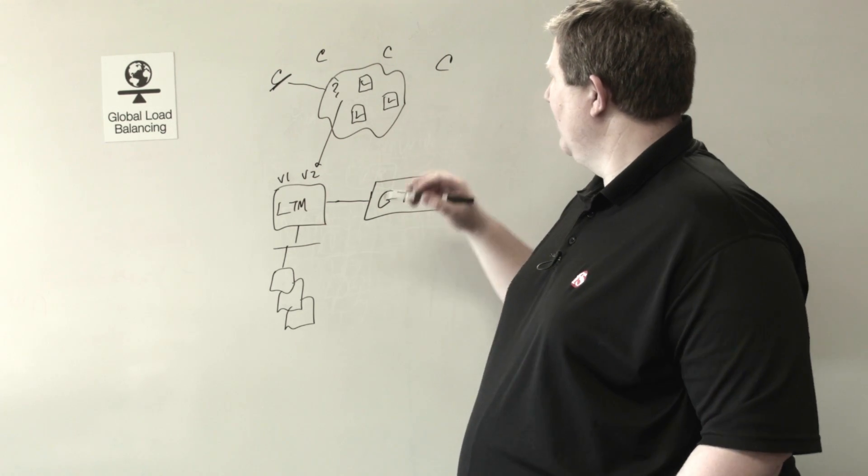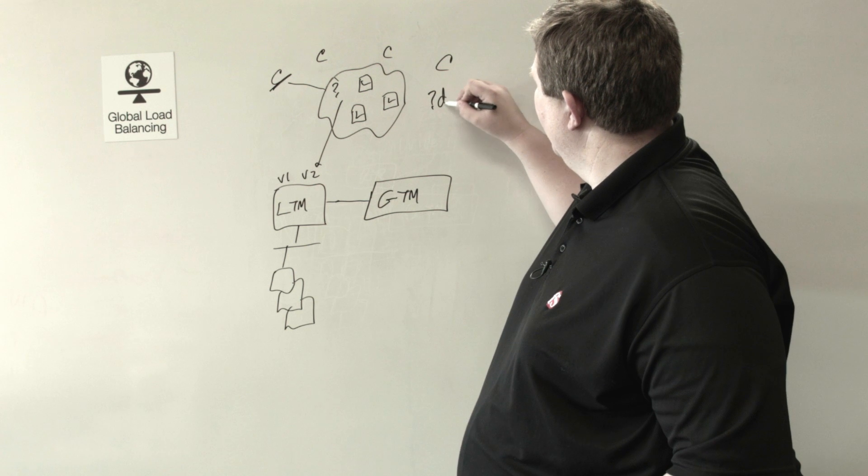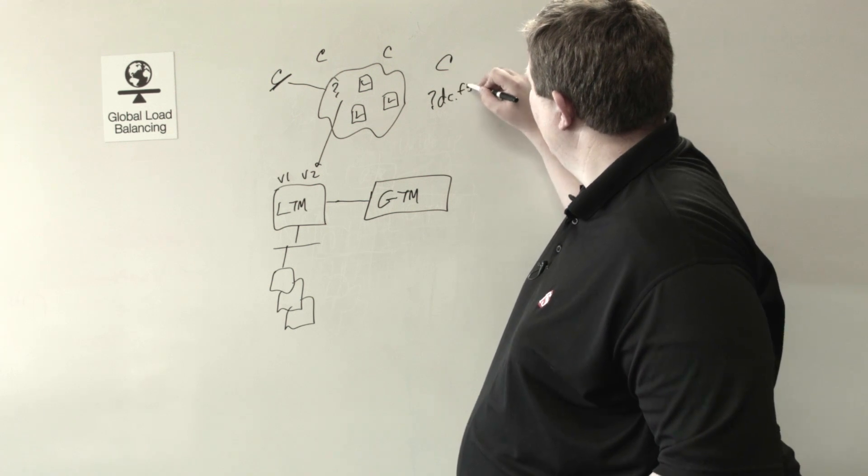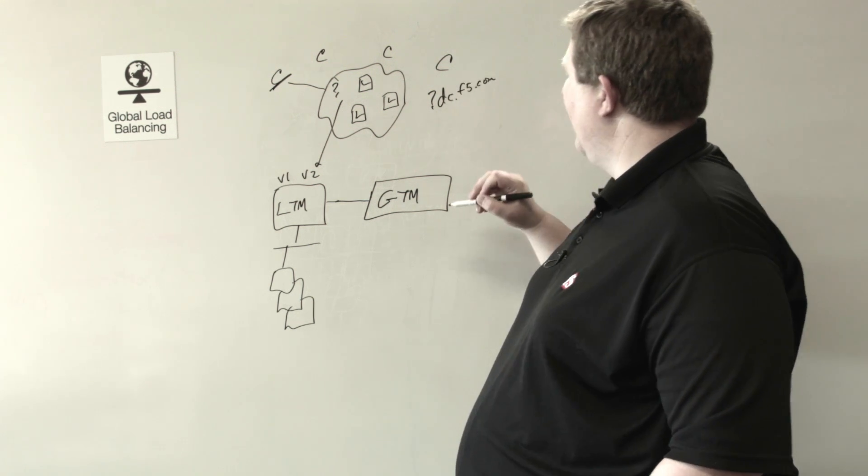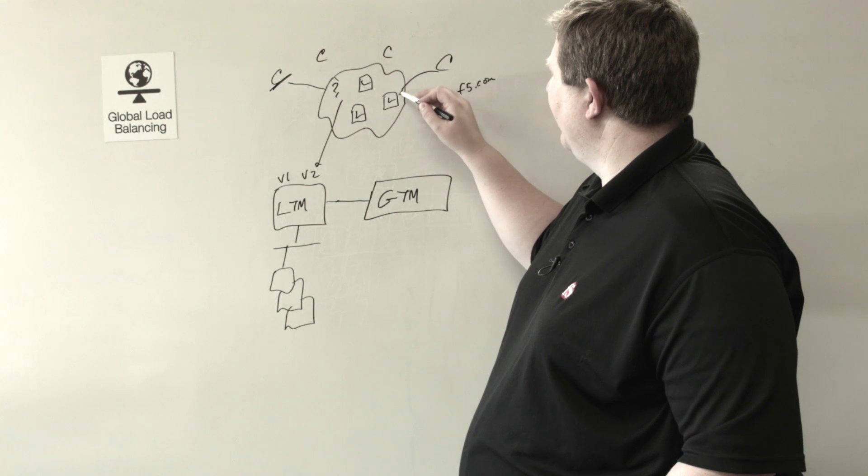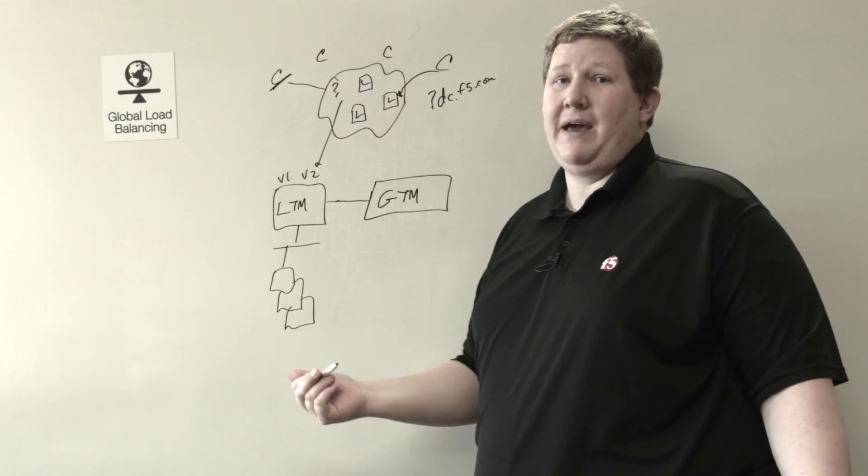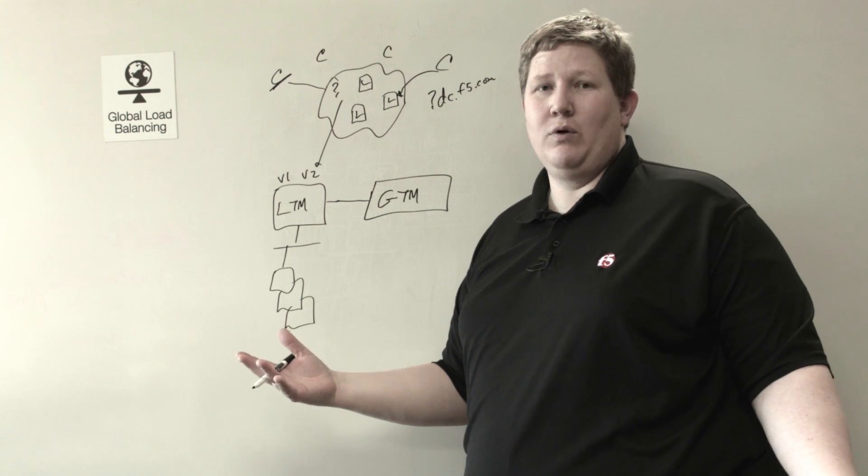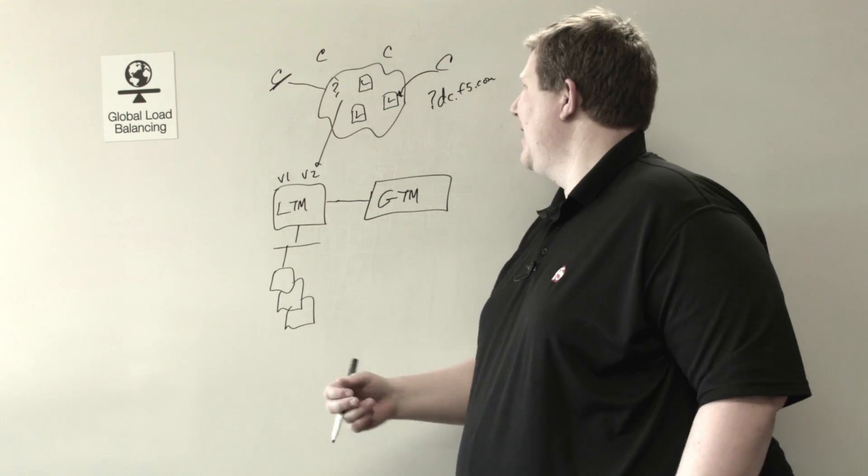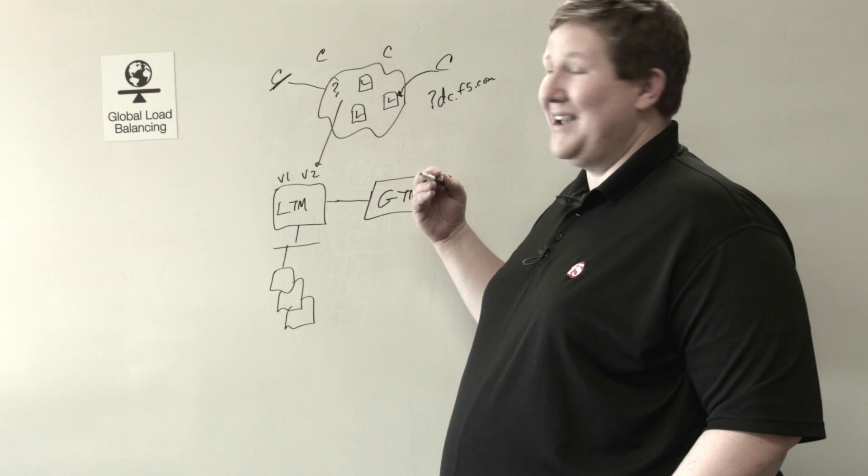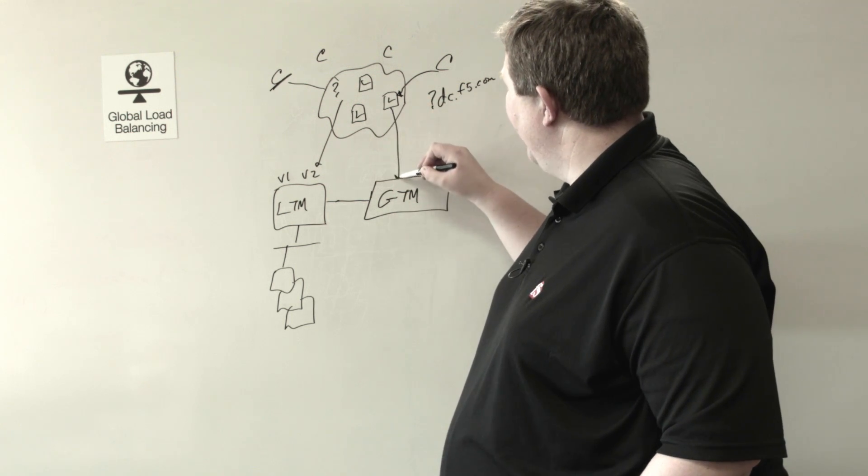So these clients have a question: where is devcentral.f5.com? And they'll ask their LDNS server. And then the LDNS server, if it doesn't have that cached, which LDNS server in the world would not have devcentral cached... but I digress. So the LDNS would request of the GTM.